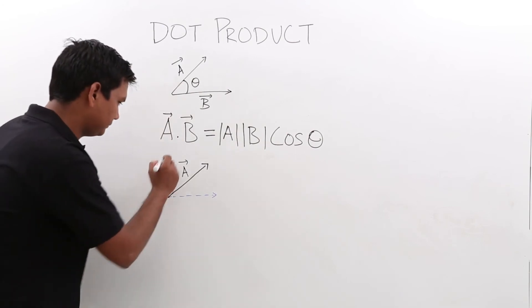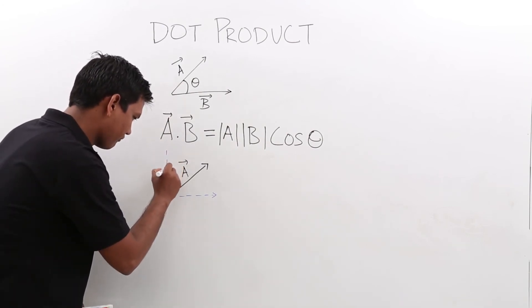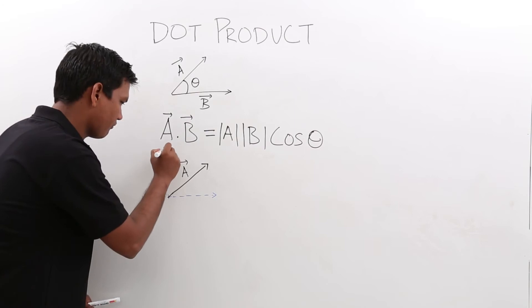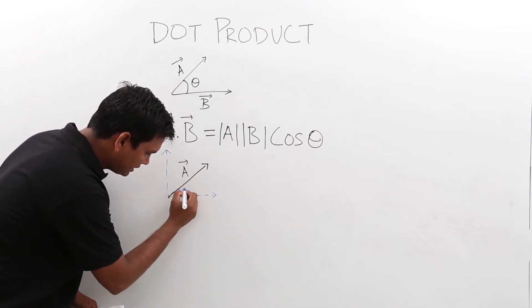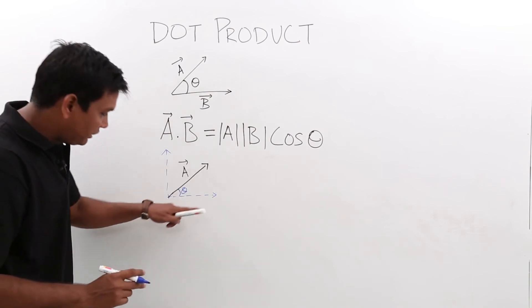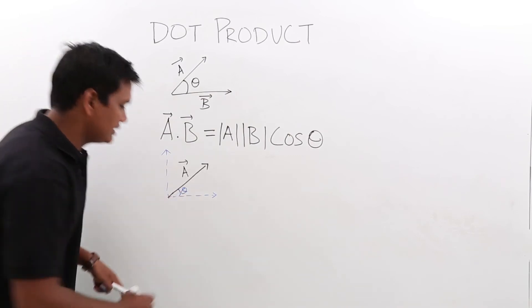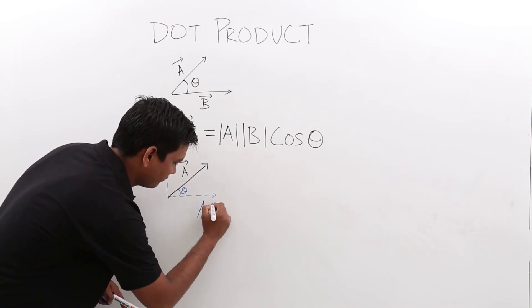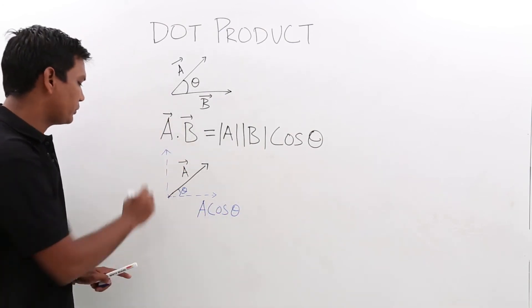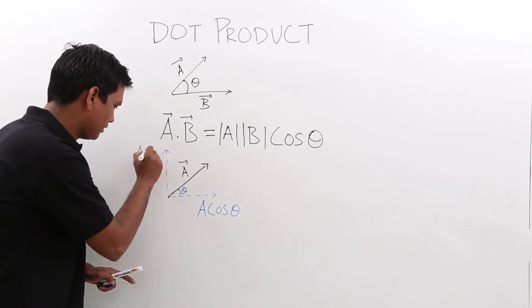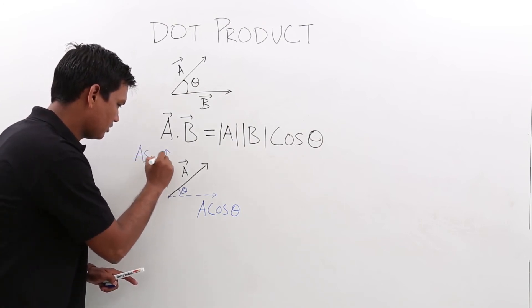This will be one component. This will be the another component. As you know, this is theta, the field along the theta would be called as A cos theta and the another would be called as A sin theta.